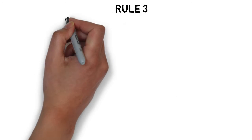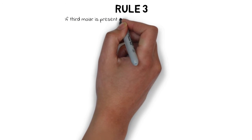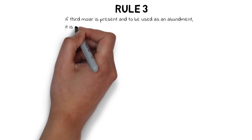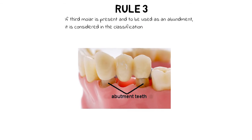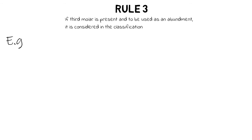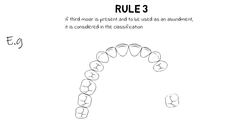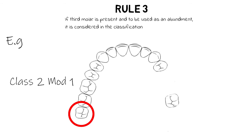Rule 3 states that if the third molar is present and is to be used as an abutment, it is considered in the classification. An abutment is the tooth from which the denture takes its support. So if we are going to use the present third molar as an abutment for our denture, we include it in the classification, and the case would be classified as Class 2 modification 1. Modifications will be explained in rule 6.